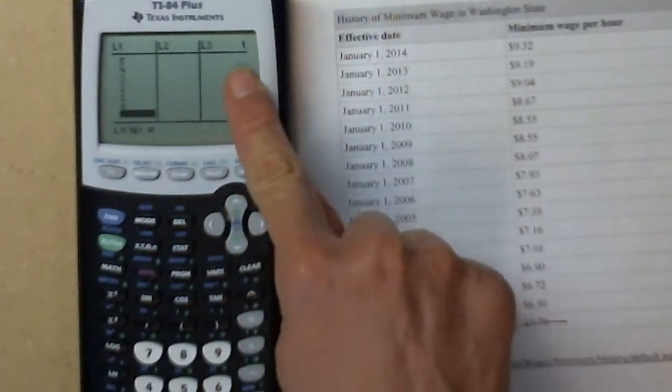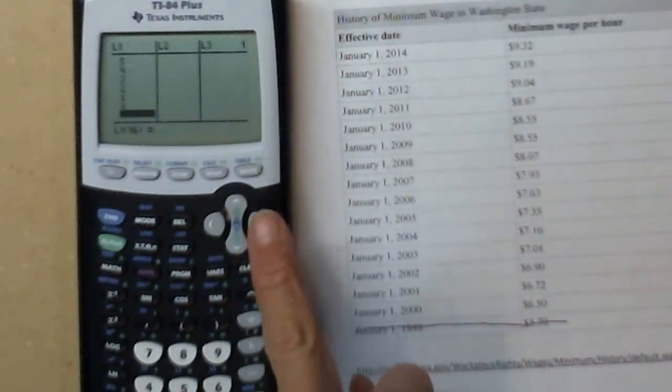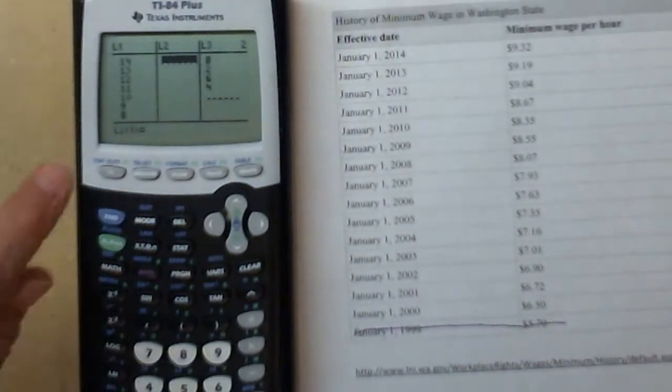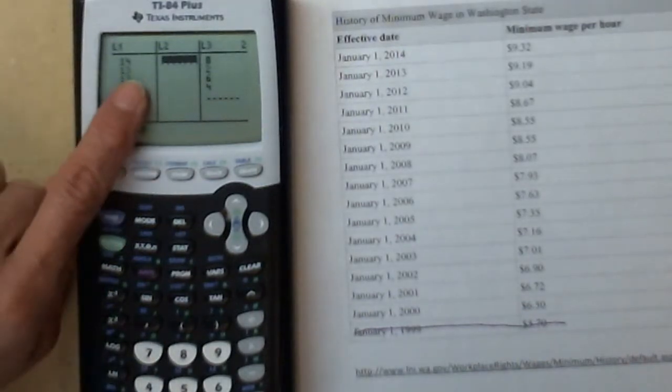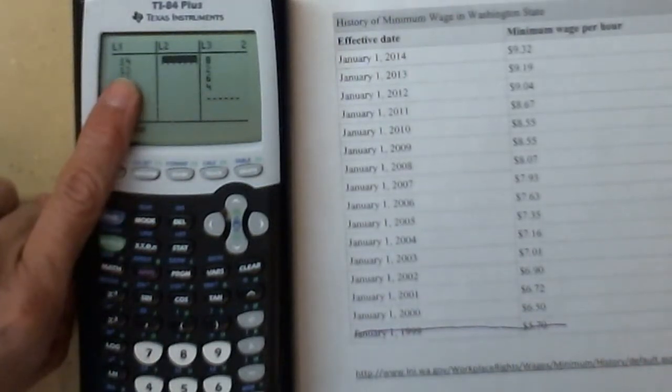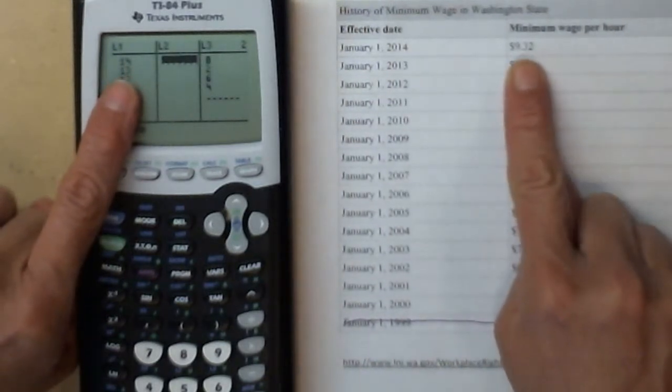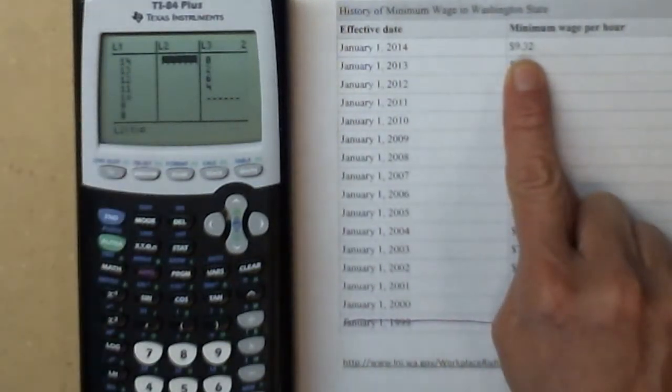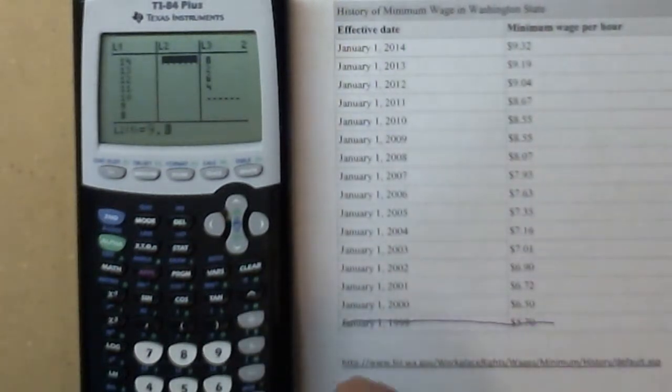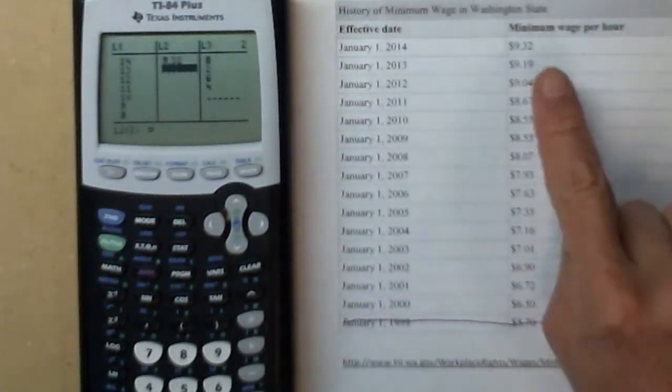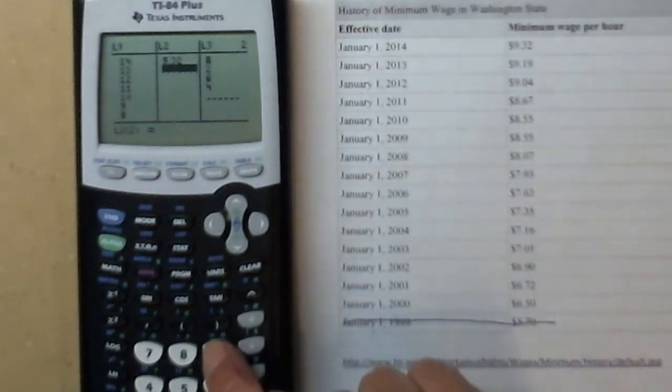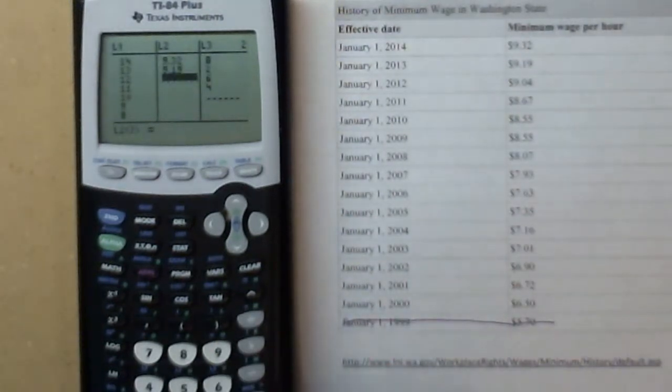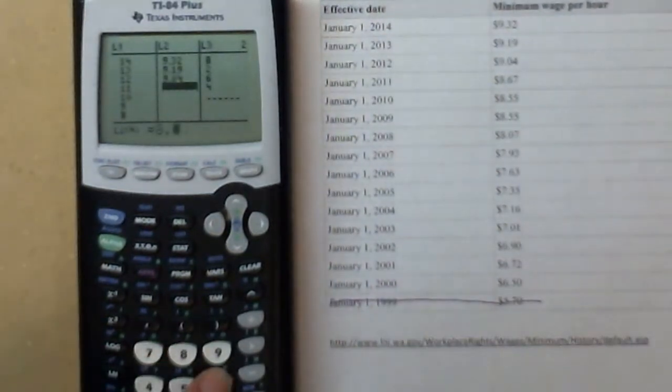Now I need to do the corresponding minimum wage. I'm going to right arrow to get into my L2 column. Now I'm highlighted right across from the 14, so I need to put in the year 14 minimum wage. That was 9.32. Then for 2013, that was 9.19, and 9.04, and 8.67, and 8.55.